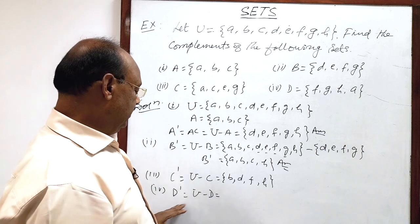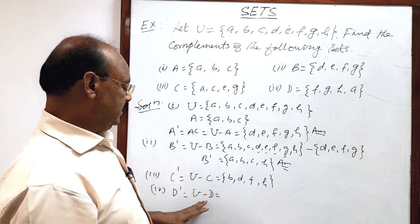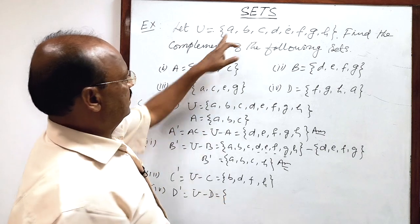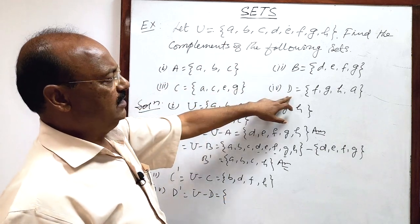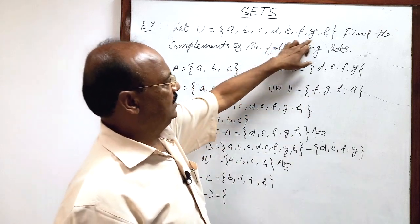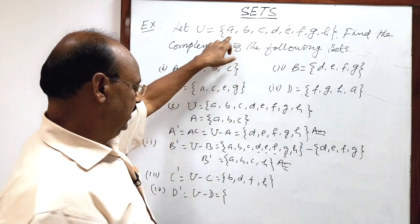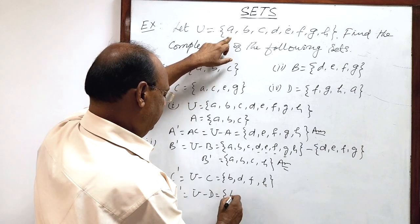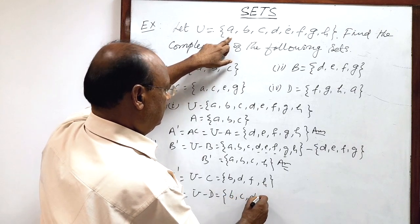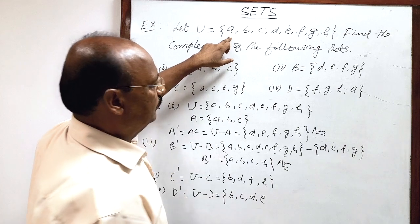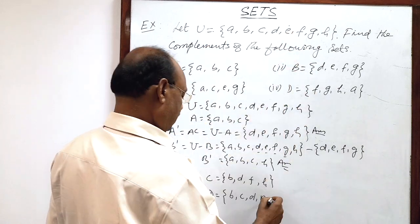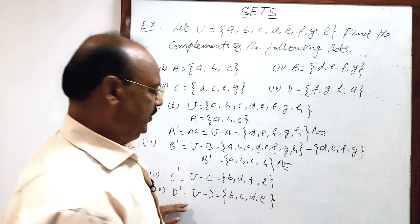Similarly, D complement is universal set minus set D. Universal set is here, set D is here. Elements f, g, h, and a will be removed. So the remaining elements will be b, c, d, and e. This is D complement.